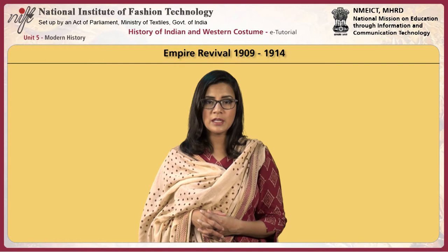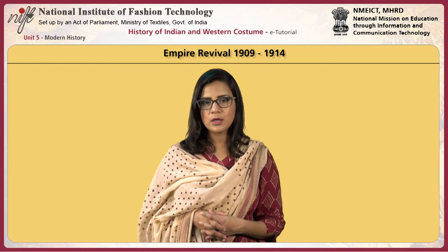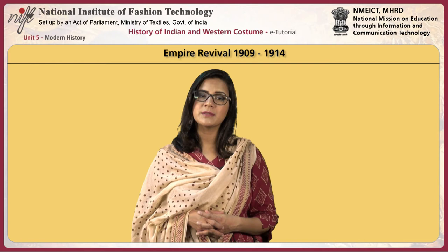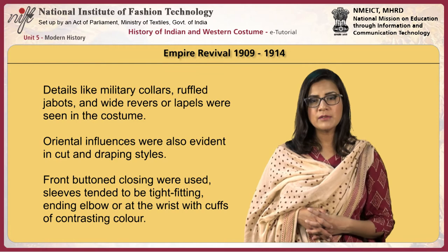Underwear included a brassiere, straight corset, knickers and a chemise — comparatively lesser in quantity than other periods. The silhouette was becoming narrower and straighter. The location of the waistline moved upward. Skirts narrowed and grew shorter. The high boned collars gradually went out of fashion. Details like military collars, ruffle jabots, and wide revers or lapels were seen in costume.